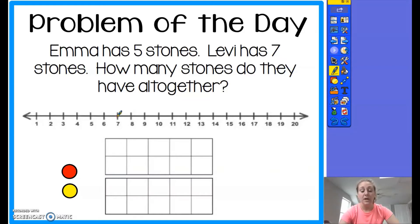I'm going to start at seven and I'm going to hop on five more: one, two, three, four, five, to show that we have a total of twelve. I can show that in an equation by saying Levi has seven stones plus the five stones that Emma had gives us a total of twelve stones altogether.